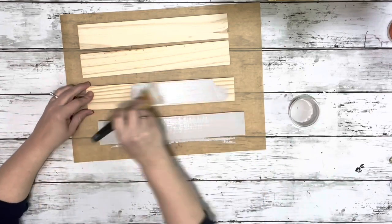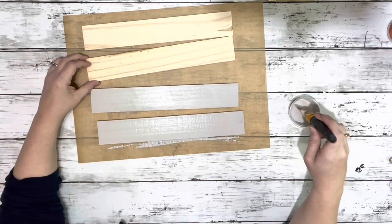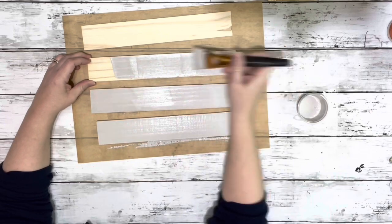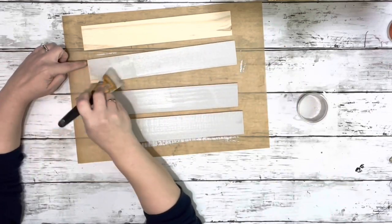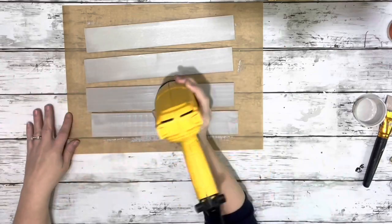And I do this with the water so it makes it nice and thin and gives it more of a stained look. And I just did one coat on all of those. And I used my heating tool to speed up the drying process.